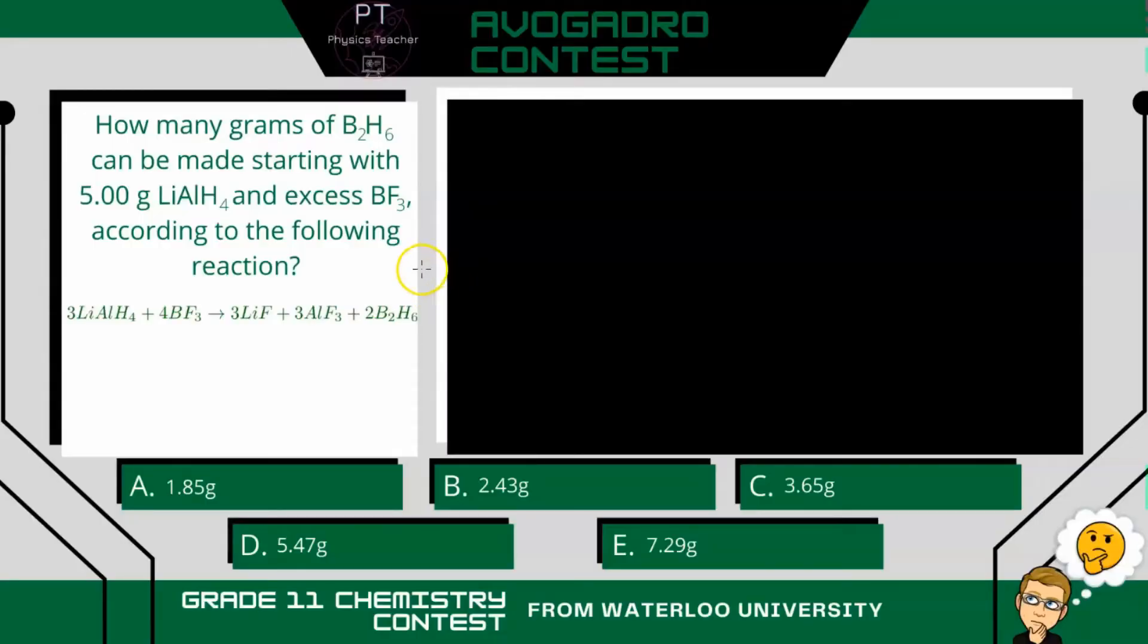So in this question, it wants to know how many grams of diborane can be made starting with 5 grams of lithium aluminum hydride and an excess of boron trifluoride, according to this following reaction. We have two reactants, and it says we have an excess of boron trifluoride, which means the lithium aluminum hydride is our limiting reactant.